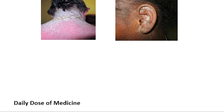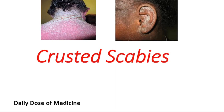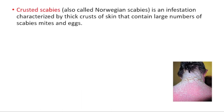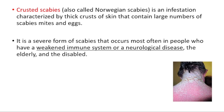Hey everyone, in today's video we're going to talk about crusted scabies, which is also known as Norwegian scabies. It's an infestation characterized by thick crusts of skin that contain large numbers of scabies mites and eggs. It's a severe form of scabies that occurs most often in people who have a weakened immune system or a neurological disease, the elderly and the disabled.